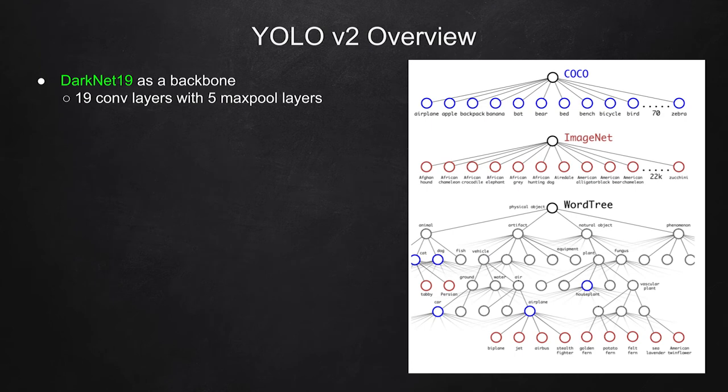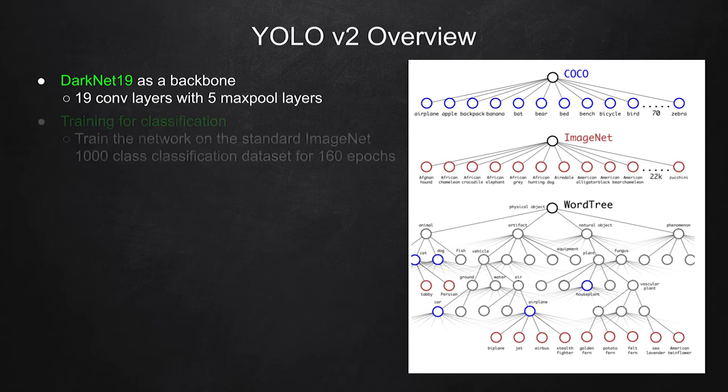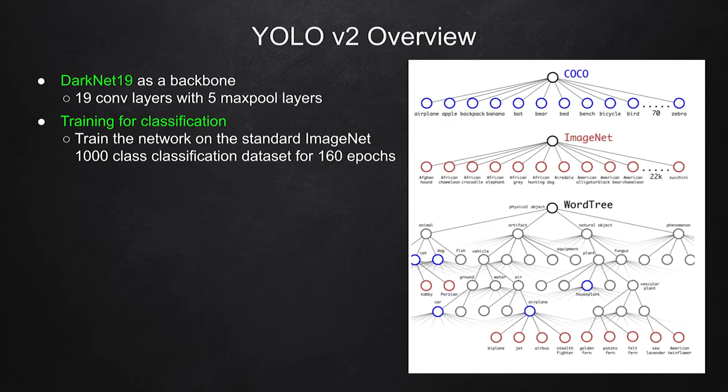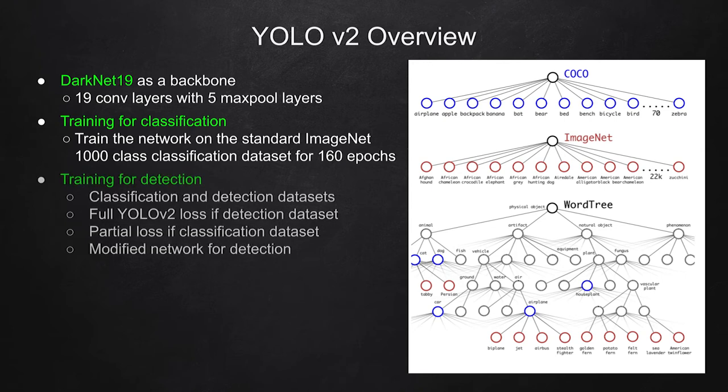Now, for faster speed, the model uses a backbone called Darknet 19. It's composed of 19 convolutional layers and 5 max-pooling layers. And when training this model, YOLO V2, it's first trained on an ImageNet classification dataset that has 1000 classes. And on this dataset, it's trained about 160 epochs. Once this model is trained on a classification dataset, it's further trained for detection tasks using both classification and object detection datasets.